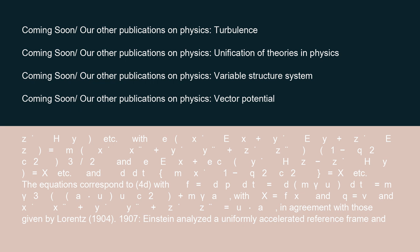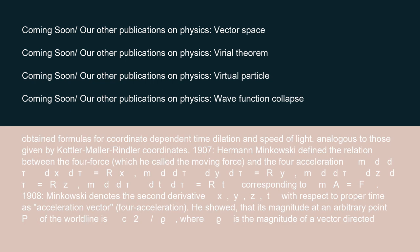1907: Einstein analyzed a uniformly accelerated reference frame, and obtained formulas for coordinate-dependent time dilation and speed of light, analogous to those given by Rindler coordinates.